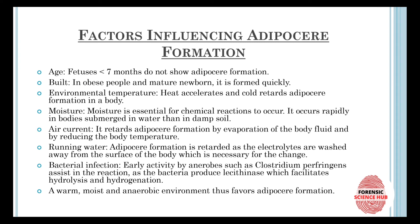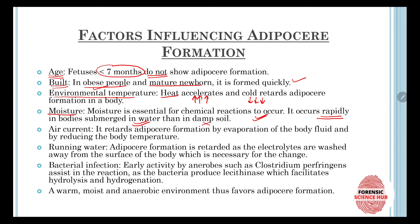Factors influencing adipocere formation include: age — fetuses less than seven months old do not show adipocere formation; build — in obese people and mature newborns it forms quickly due to greater fatty tissue; environmental temperature — heat accelerates the process while cold retards it; and moisture — essential for chemical reactions, it occurs more rapidly in bodies submerged in water than in damp soil.